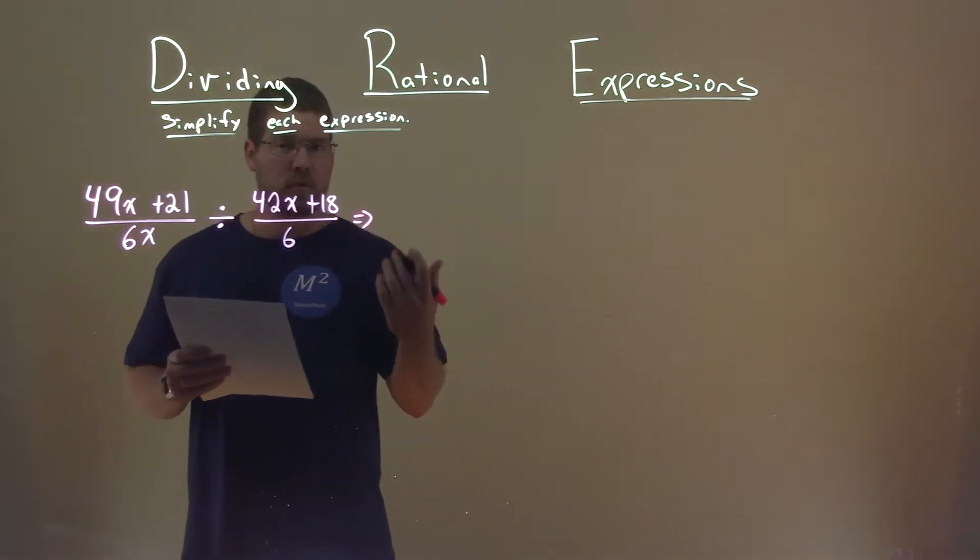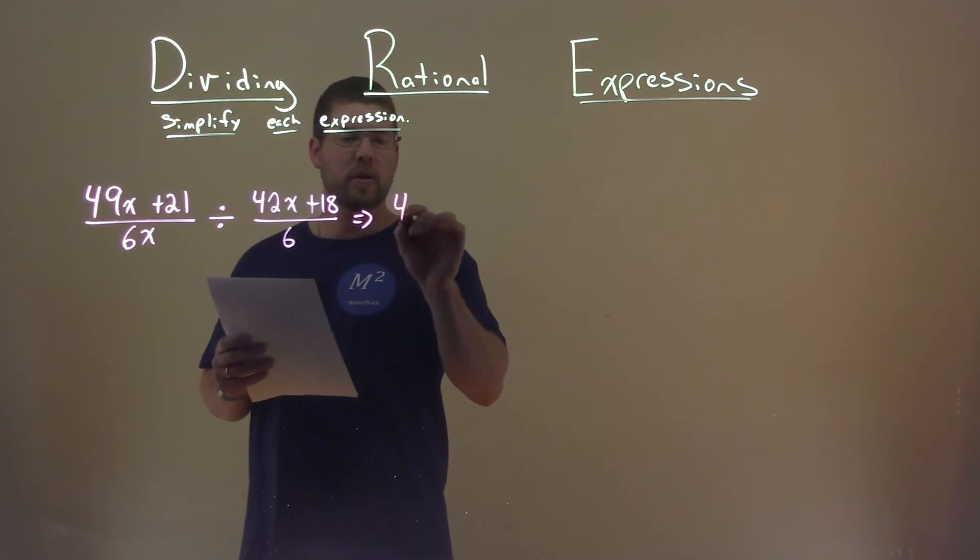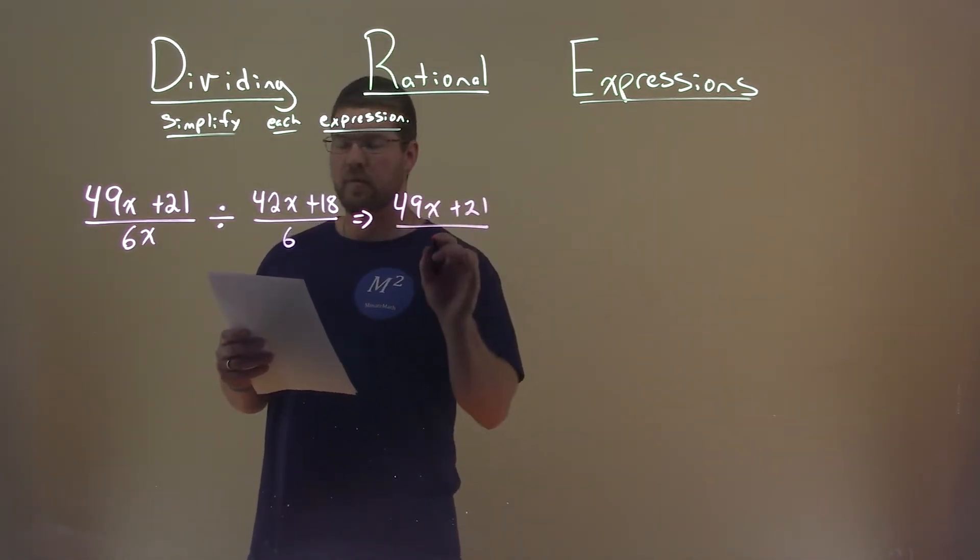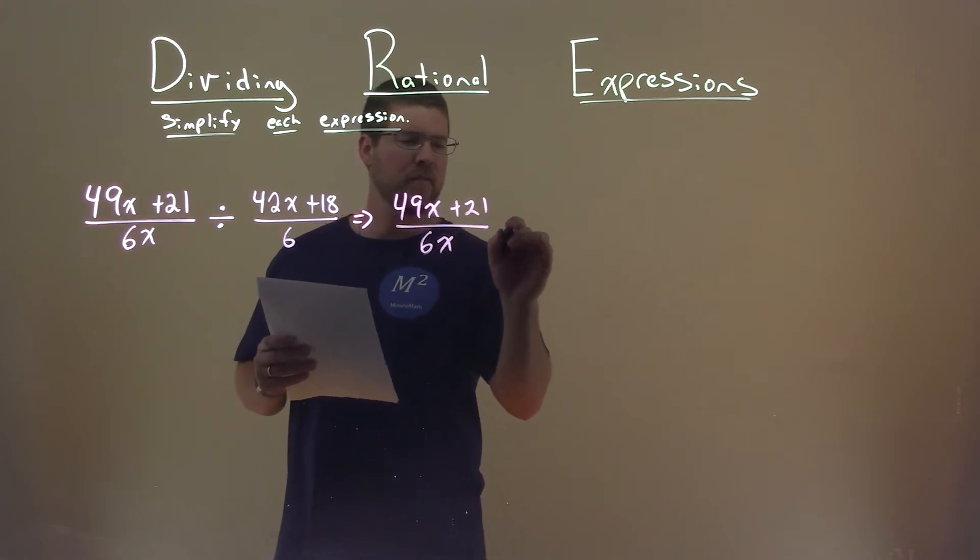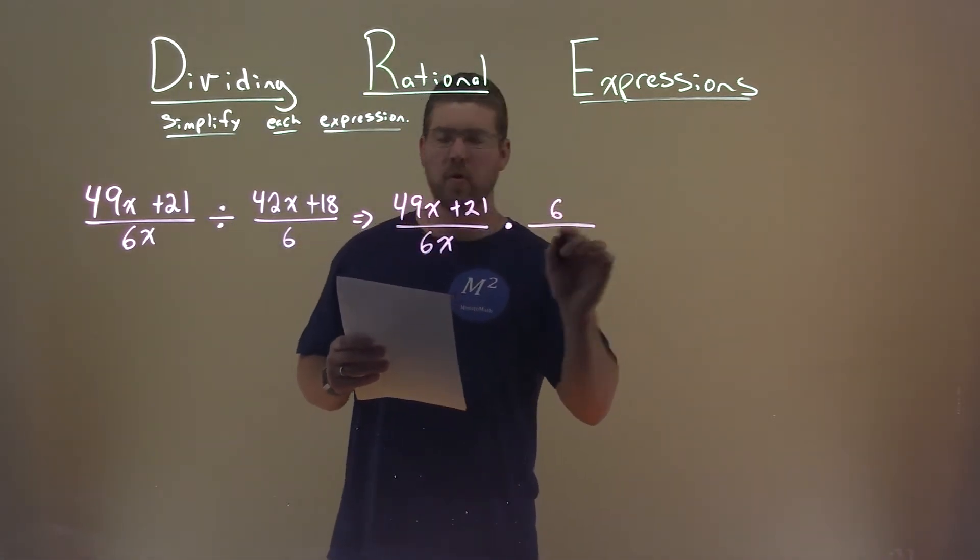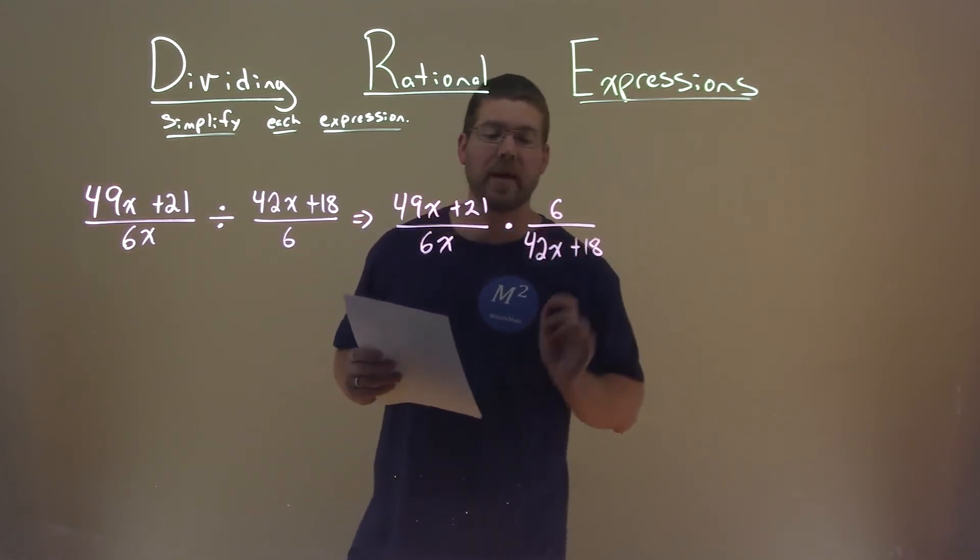I'd first like to rewrite this as a multiplication problem. So the first part stays the same, 49x plus 21 over 6x, but instead of dividing, we're multiplying, and we need to flip the second fraction, 6 over 42x plus 18.